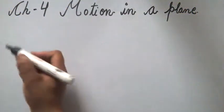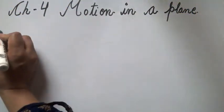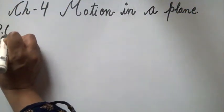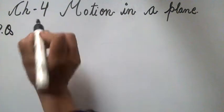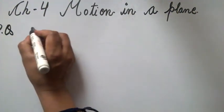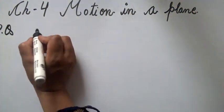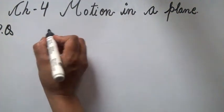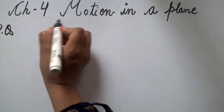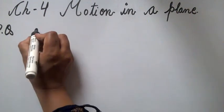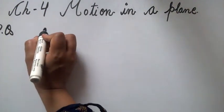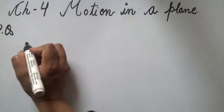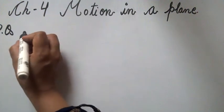In this chapter, we will study about those physical quantities which are moving in a plane, or objects whose position is given by two coordinates. It can be xy coordinates, yz, or zx coordinates.